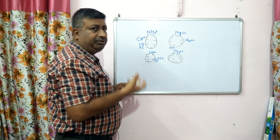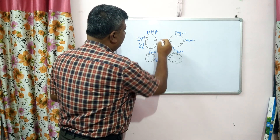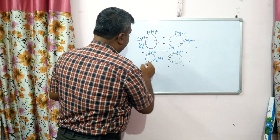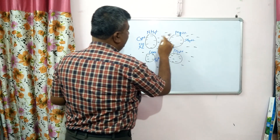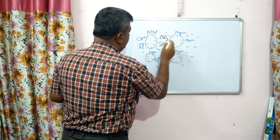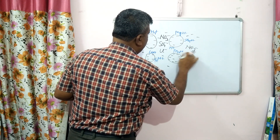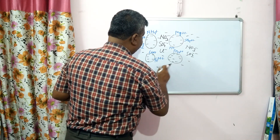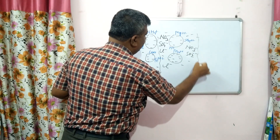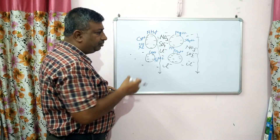In the soil solution, cations are also present, but there is a more dominance of anions like nitrate, sulphate, and chloride because these are repelled by the negatively charged soil particles. So these anions are present in the soil solution. When water moves downward, with the percolating water, chloride, sulphate, and nitrate leach down from the root zone.